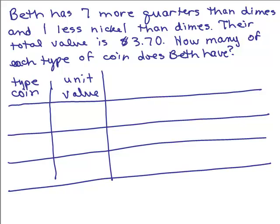We've got quarters, dimes, and nickels. So it doesn't matter what you write first, so I'll just put quarters, dimes, nickels. So that's the type of coin. And then we know each quarter's worth 25 cents. I'm going to do everything in cents, so that I don't have to use decimals.